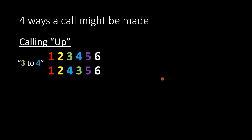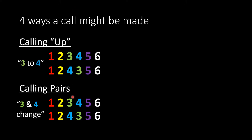There are four ways that a call might be made. The first is calling up — the most conventional way in Australia. The conductor will say 'three to four' or 'A to B', choosing the bell earliest in the change and swapping it with the bell later in the change. So 'three to four' means three and four swap order. You could also call in pairs, where the conductor says 'three and four change' — the instruction to those ringing three and four that they need to swap their order.